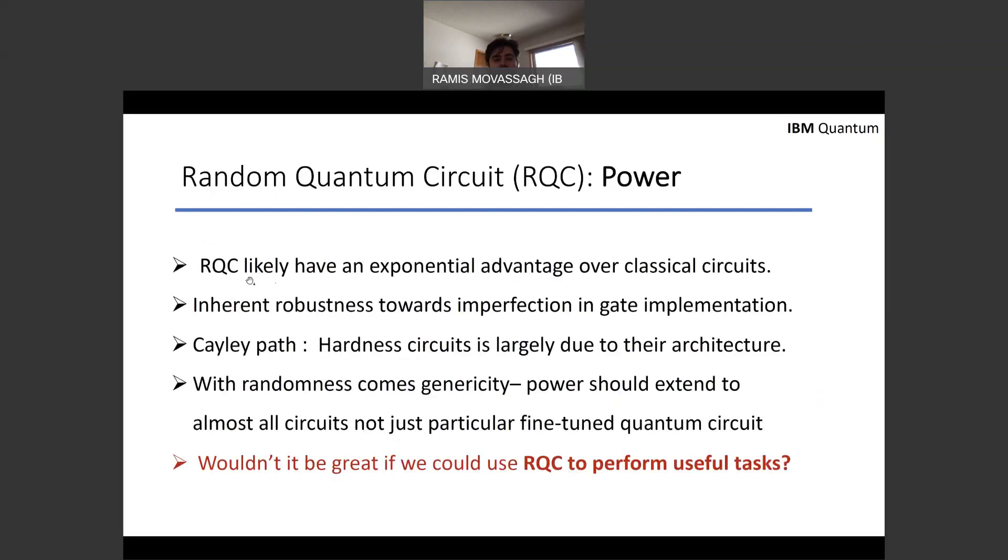So we indeed feel that random quantum circuits like to have an exponential advantage over classical circuits and are a good candidate for overturning the extended Church-Turing thesis. And they're also practical in the sense that they have some robustness towards imperfection in gate implementation by the virtue of being random. And Cayley path shows that the hardness is not so much due to the particular set of gates, but it's actually a function of the architecture. And with randomness comes generosity. So the power extends to almost all circuits.